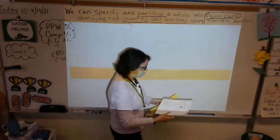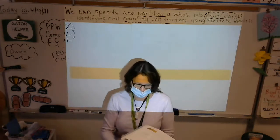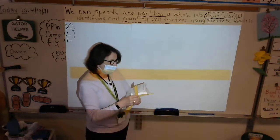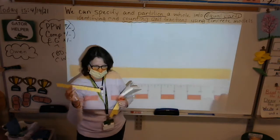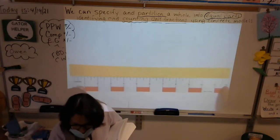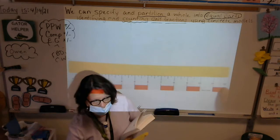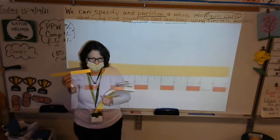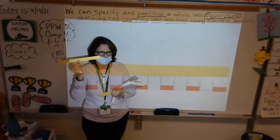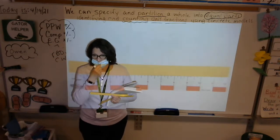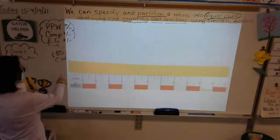Take a fraction strip and measure it with your ruler using the inch side — the red one. Go ahead and measure how long it is. Very good — our strip is 12 inches long. You can see Miss Zimmer has lined her ruler up right along her fraction strip.